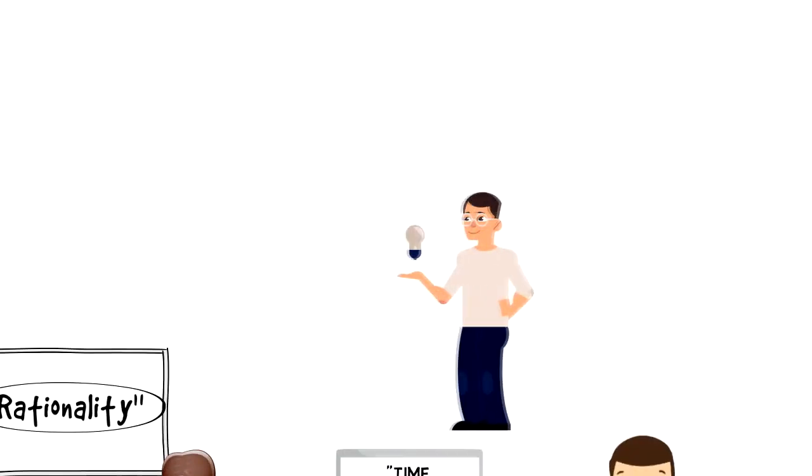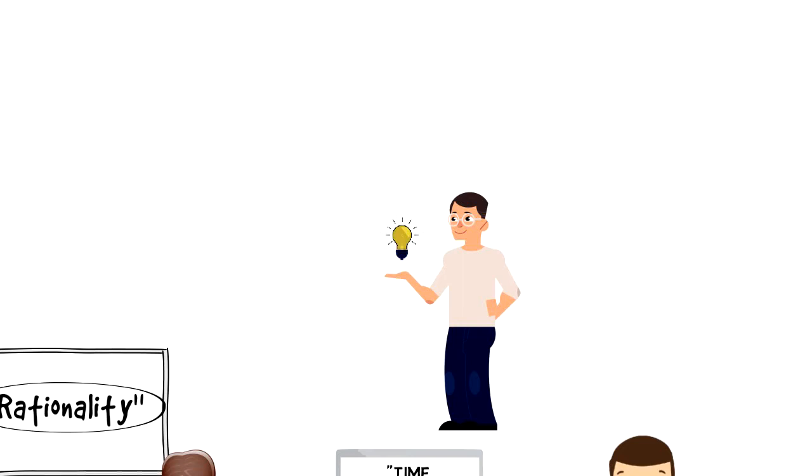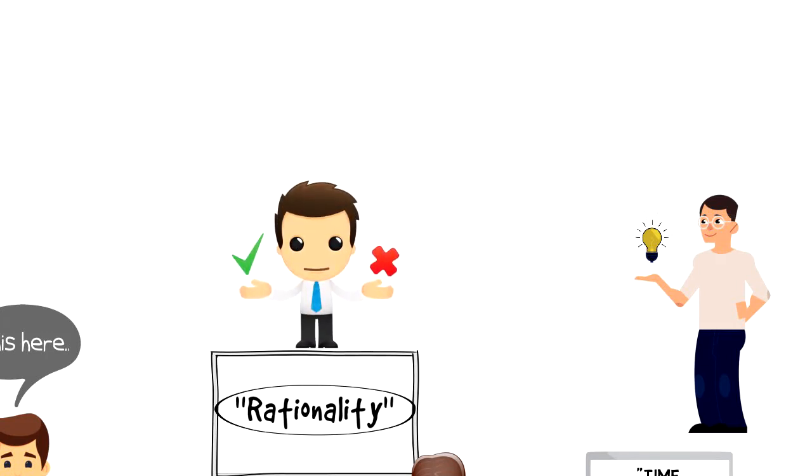Rational behavior refers to the decision-making process that is based on making choices that result in the optimal level of benefits for an individual. That means before you make a decision, you consider the benefits and downsides of making a certain choice.